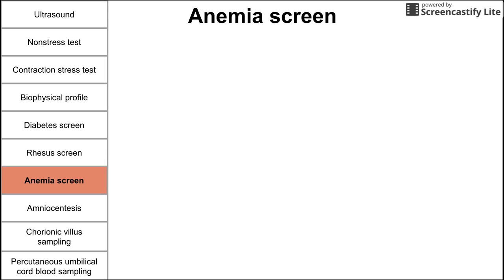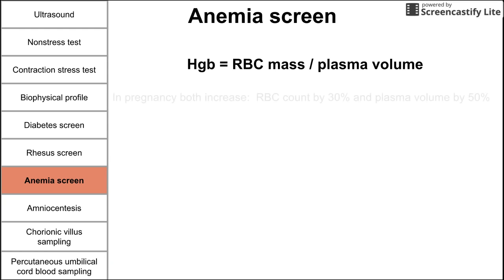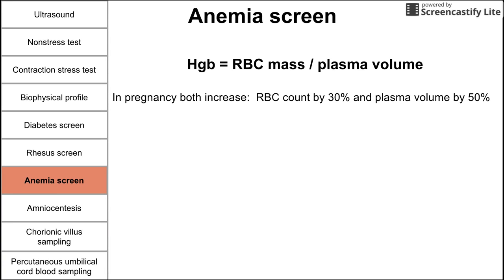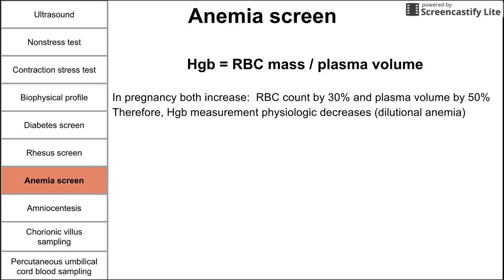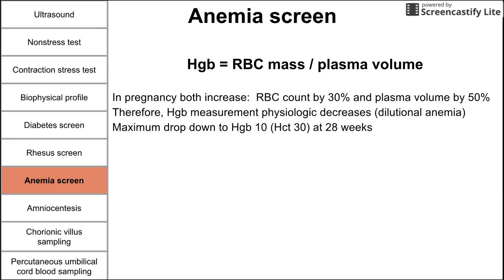Another test during pregnancy is the anemia screen. One basic equation to understand anemia is that hemoglobin equals red blood cell mass divided by plasma volume. In pregnancy, both increase — red blood cell mass increases by 30% and plasma volume increases by 50%. Because plasma volume increases more than red blood cell mass, hemoglobin decreases physiologically — this is called dilutional anemia. The maximum physiologic drop should be down to a hemoglobin of 10, or hematocrit of 30, at 28 weeks.